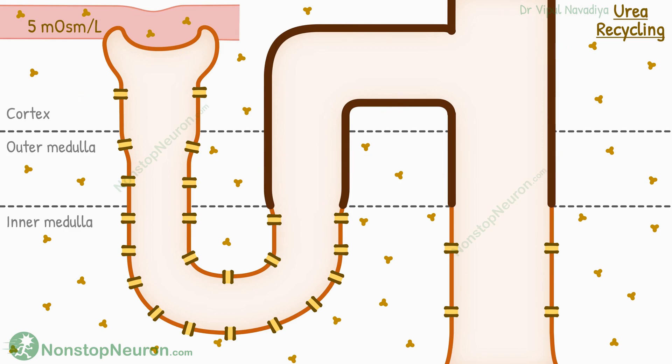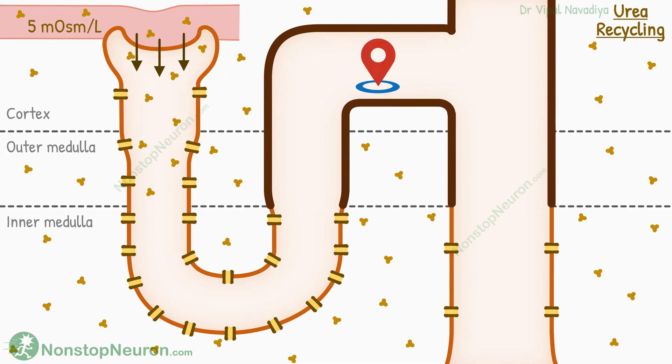Coming to urea handling by the nephron. Like many solutes, urea is also filtered freely at the glomerulus. Now usually we start the discussion of tubular processing from the proximal tubule, but the conceptual understanding of urea recycling starts from the distal tubule. So this time we will start our discussion from here. Don't worry, we will go to the proximal part later on.